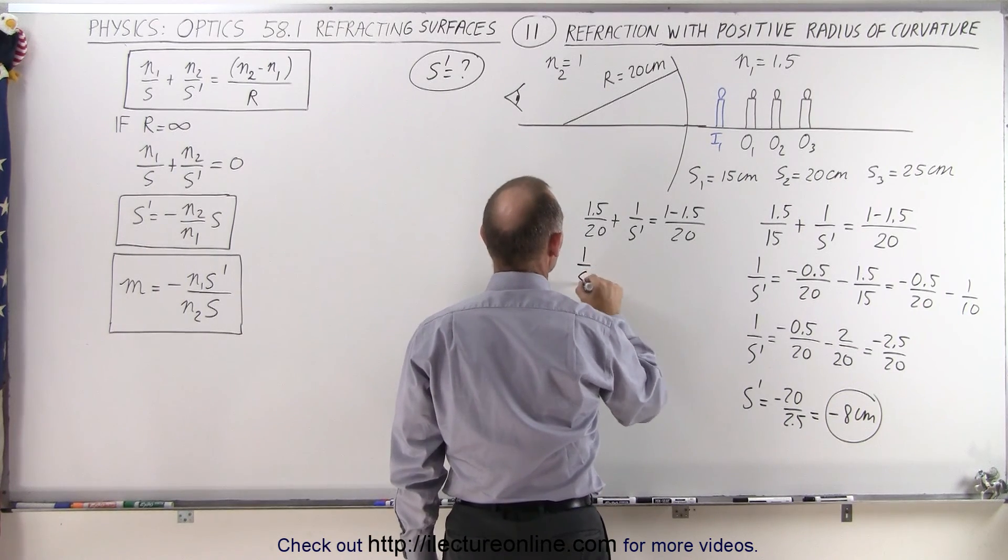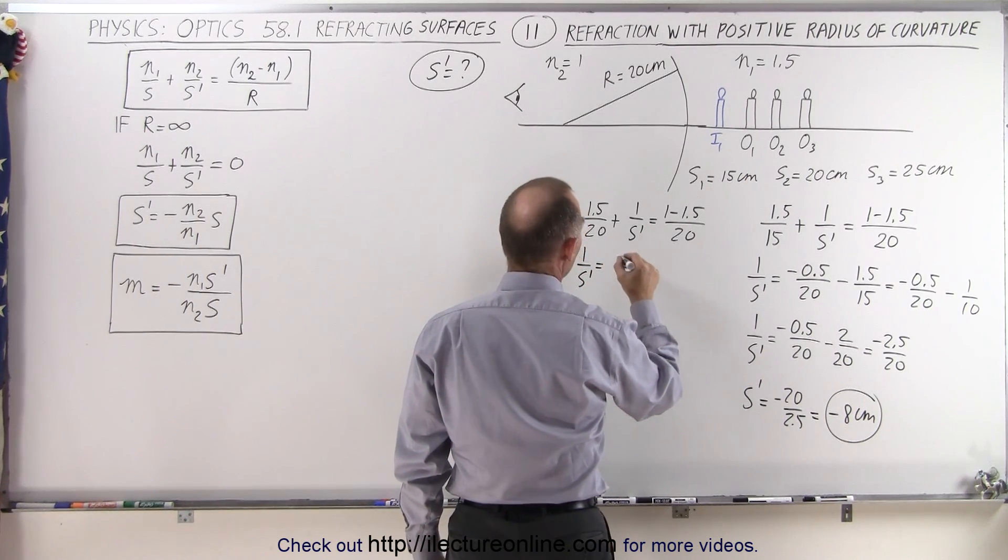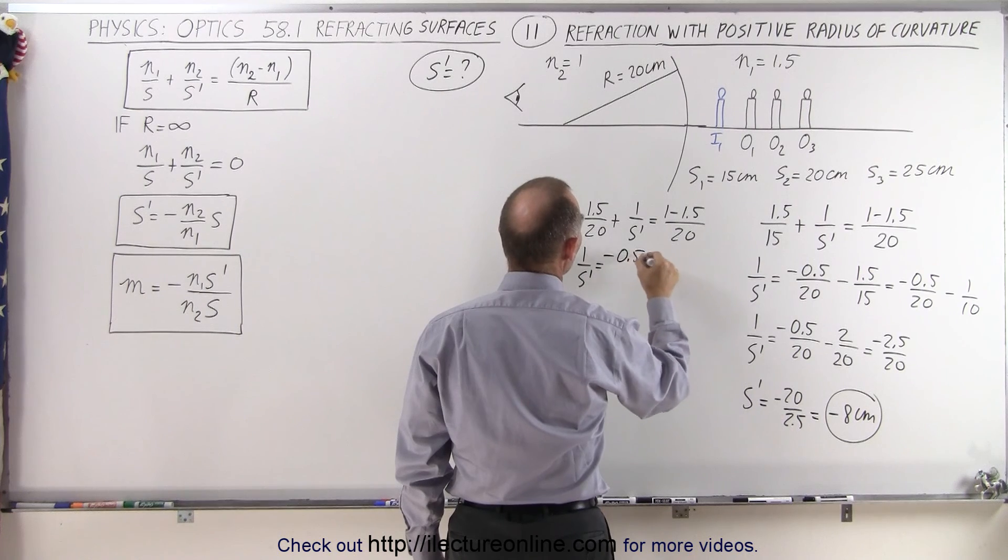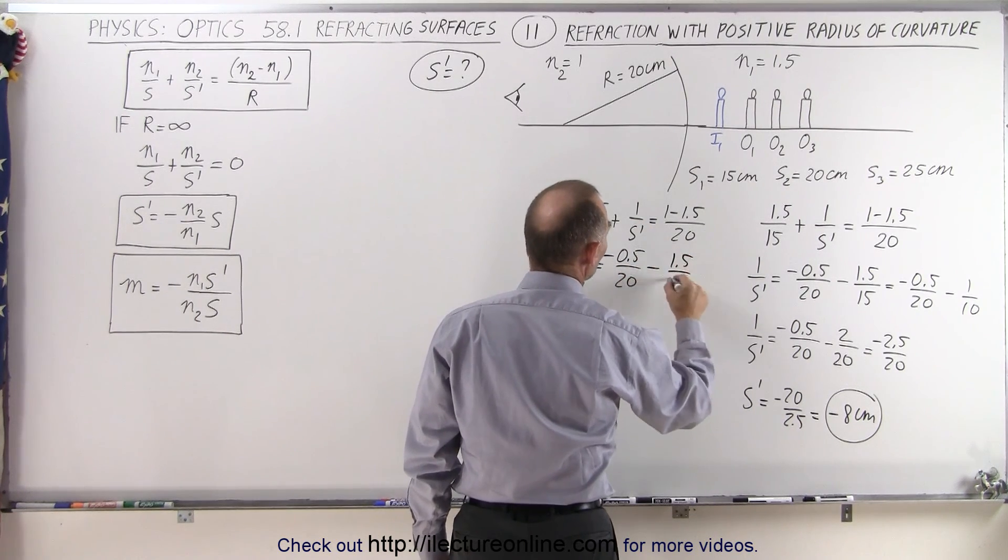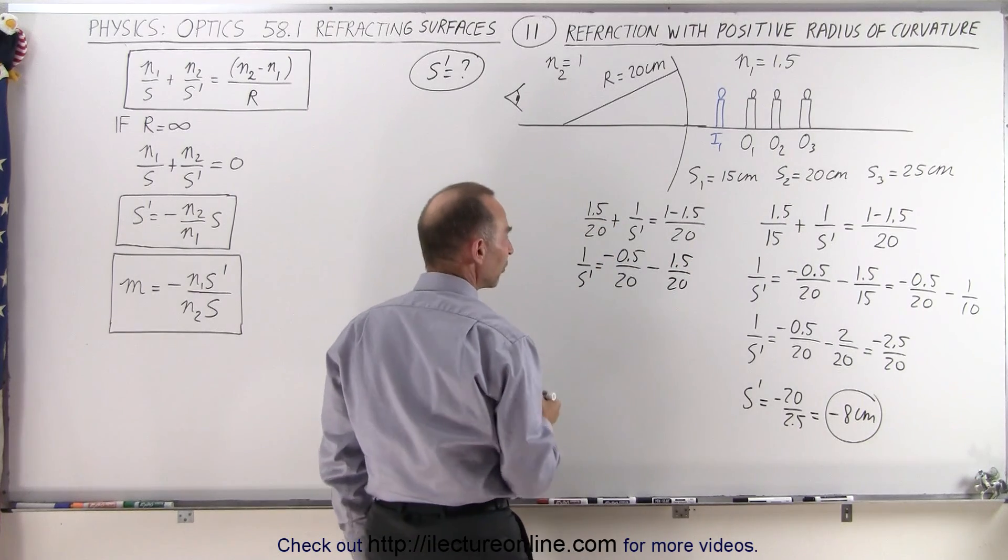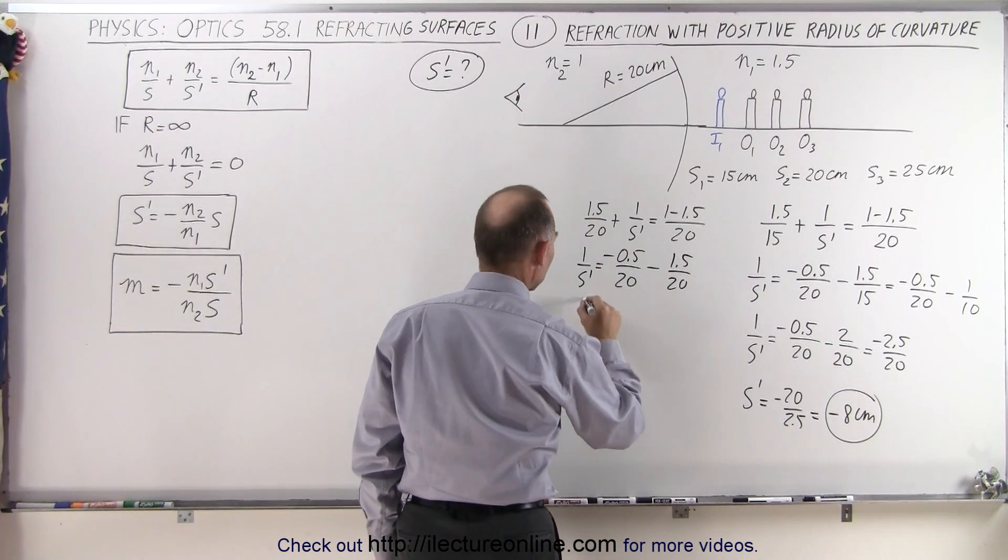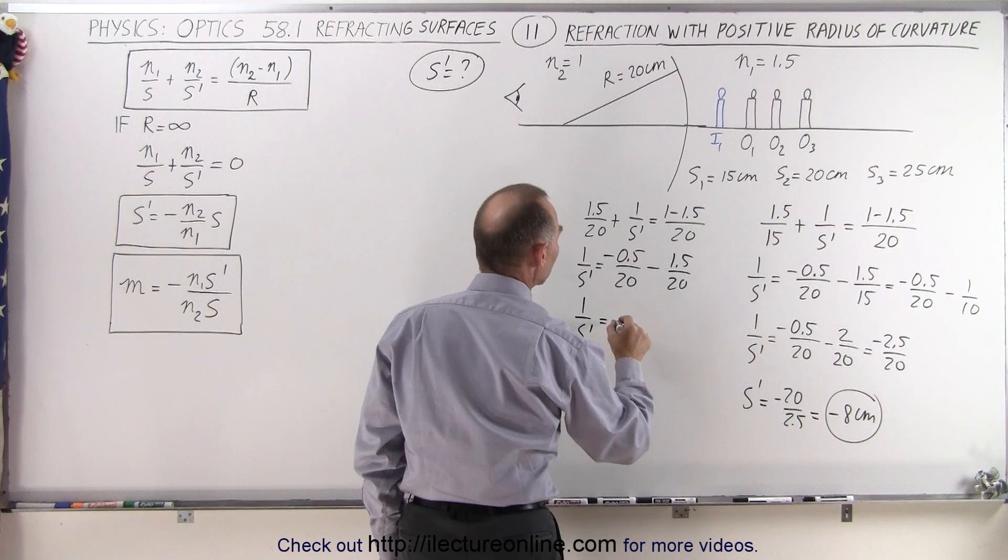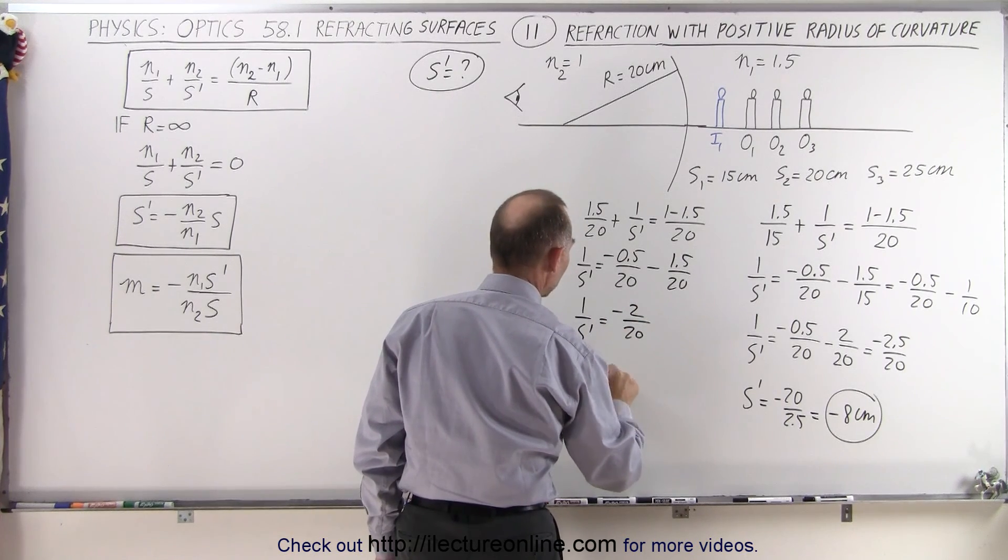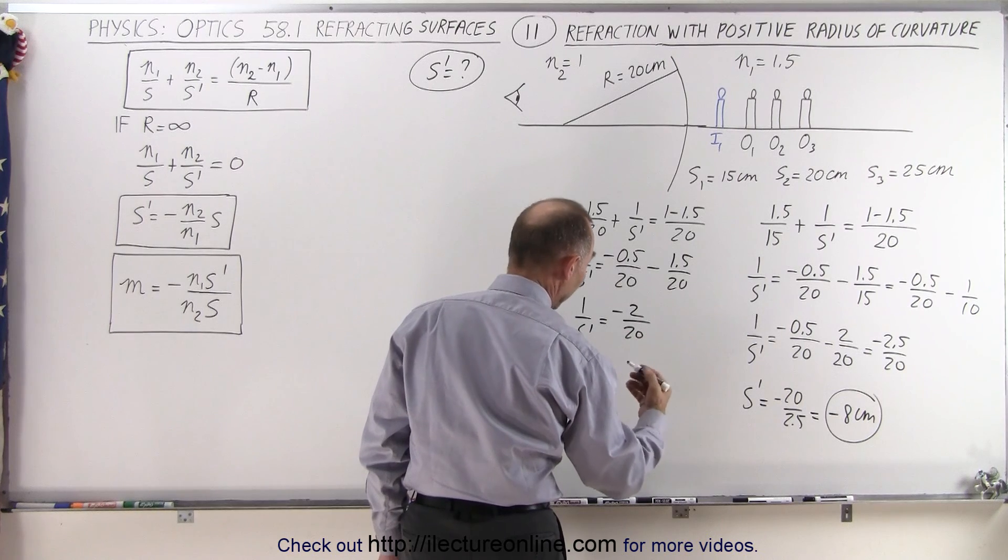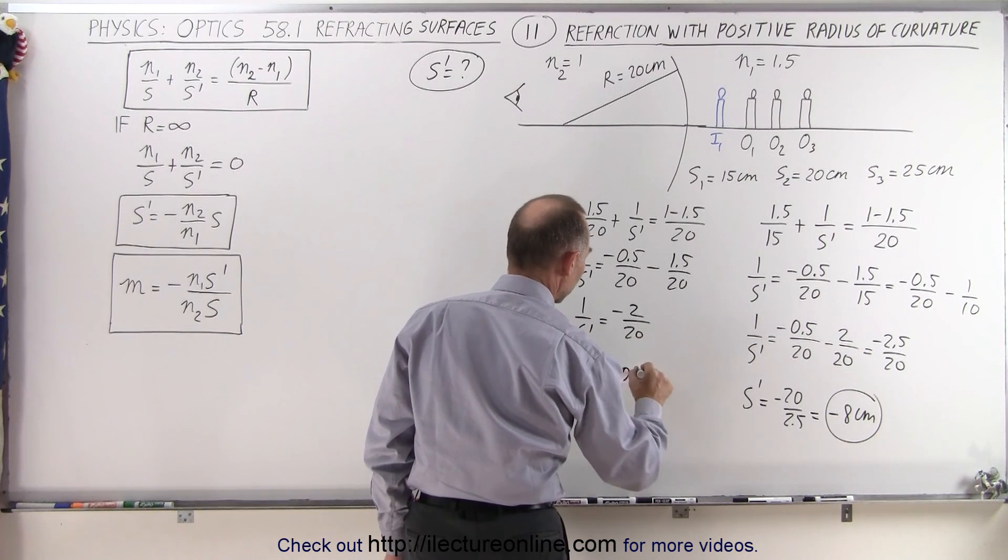And so here we have 1 over S' is equal to minus 0.5 over 20 minus 1.5 over 20. So now we have a common denominator of 20, so we can add these together. 1 over S' is equal to minus 2 over 20, which means that S' is equal to minus 10 centimeters.